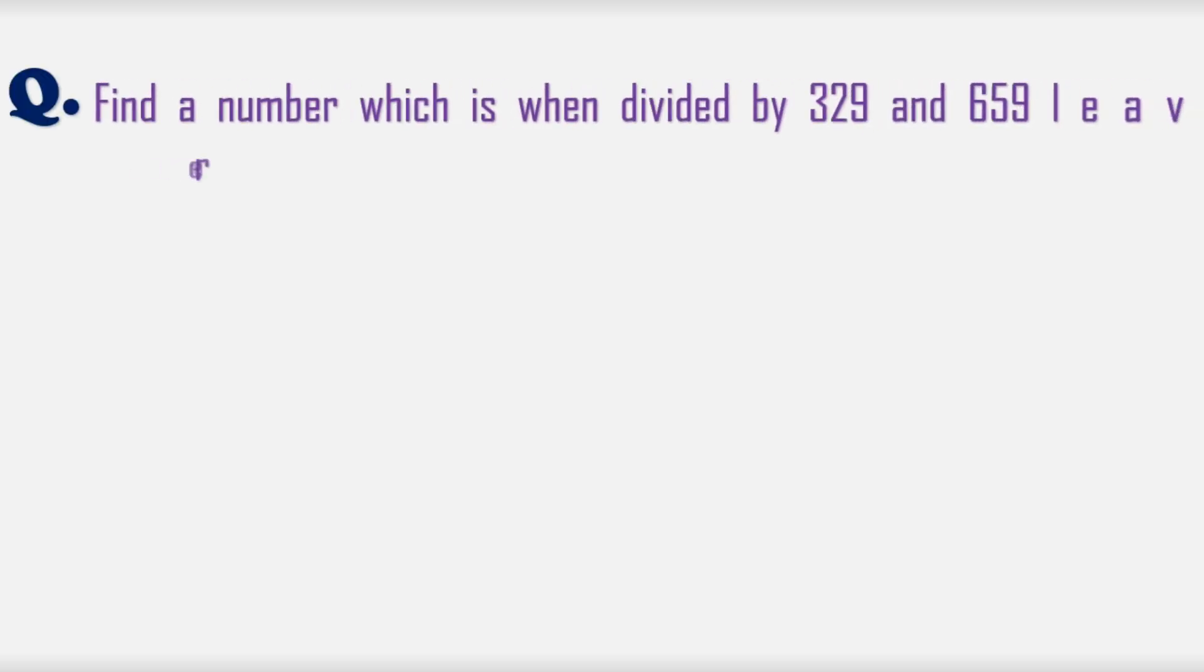Let's move forward to another question. Find a number which, when divided by 329 and 659, leaves remainders 43 and 69 respectively.